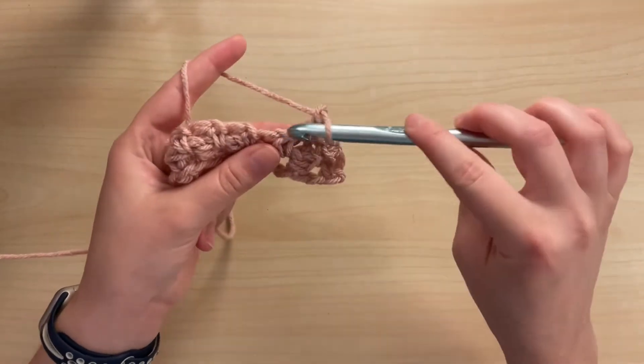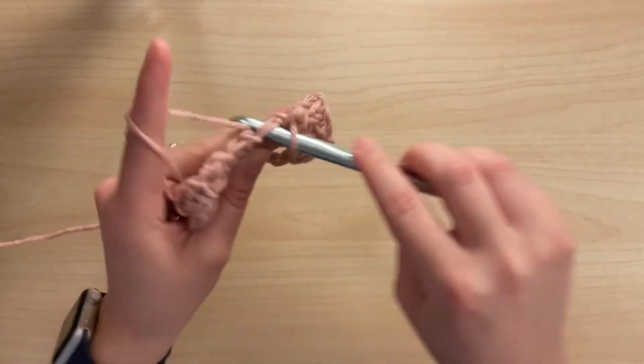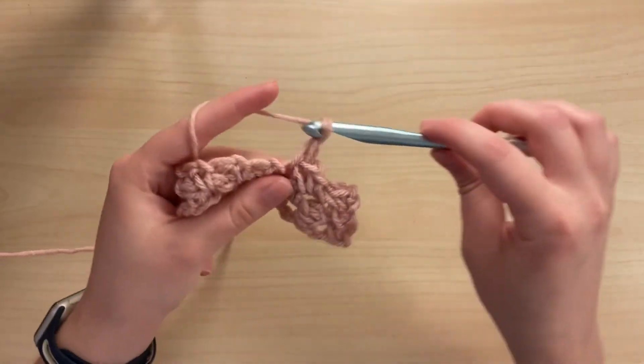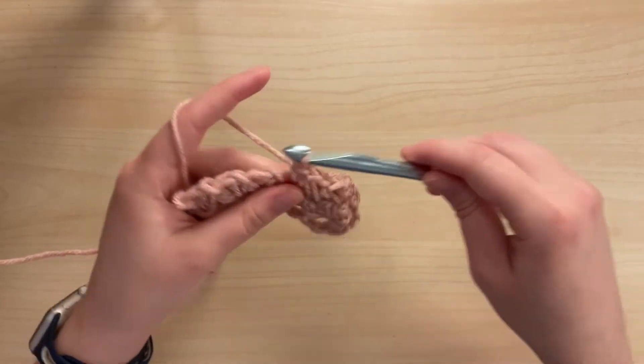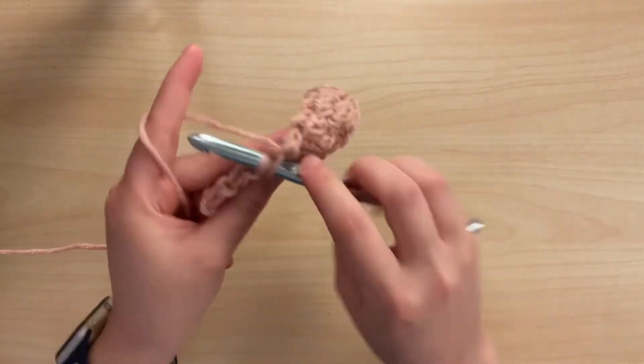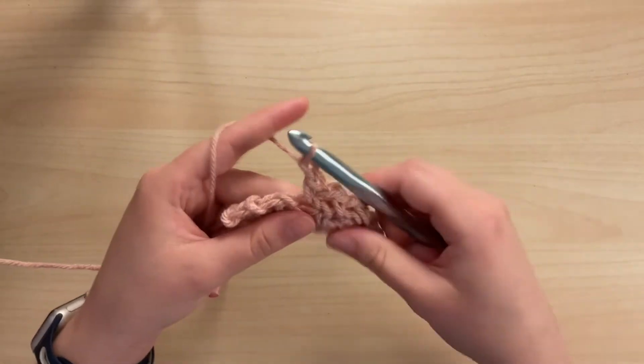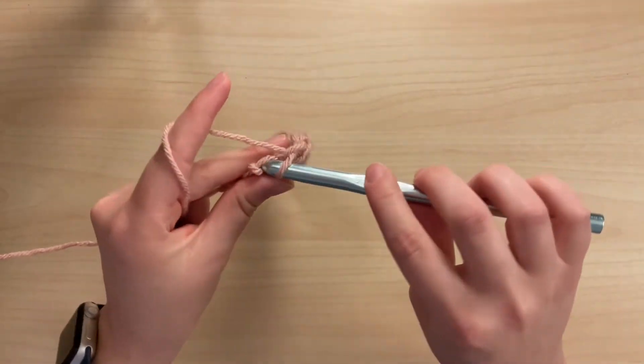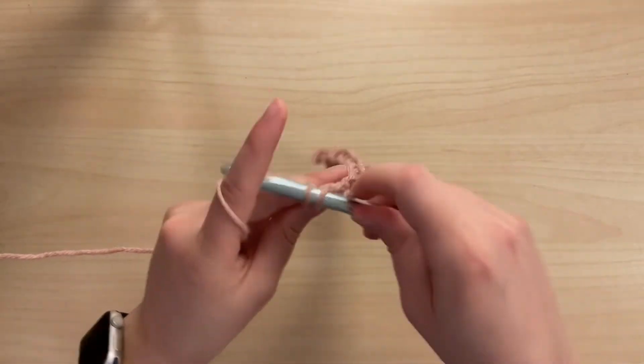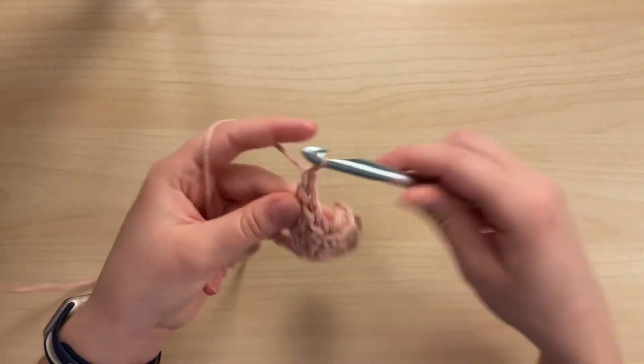Then you'll chain one, skip that stitch and then single crochet into the next. So chain one, skip and single crochet into the next. We'll do this all the way to the end of the row and then place a single crochet in that last stitch of the row. Chain one and turn.